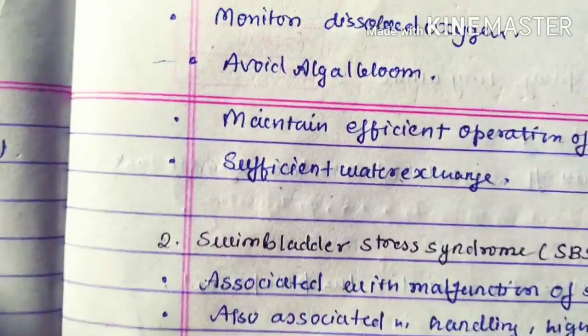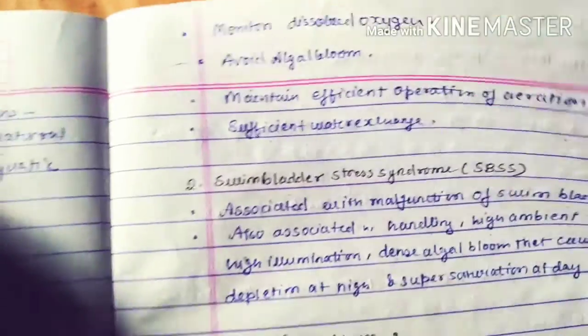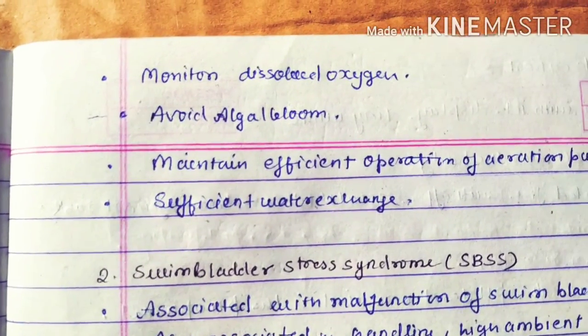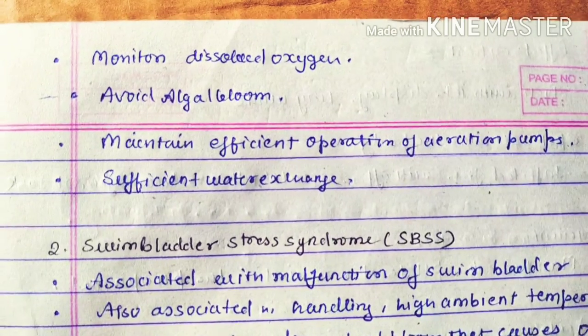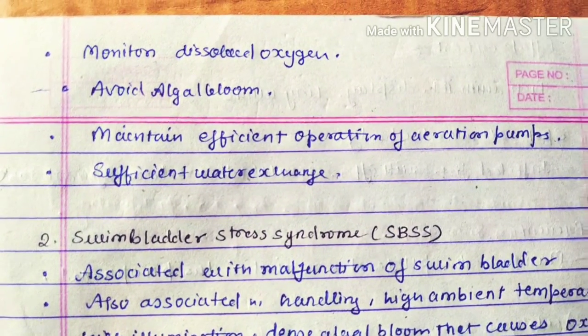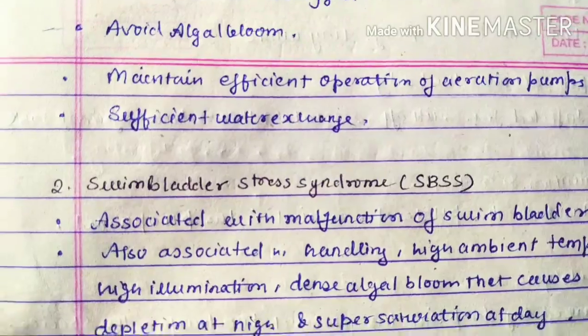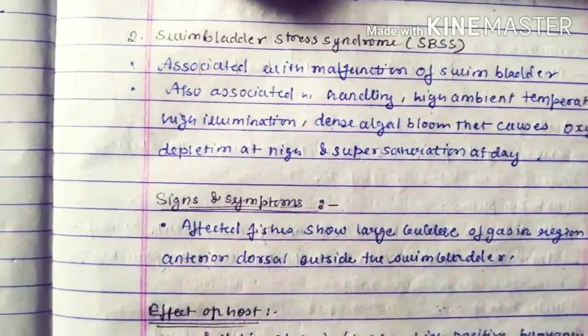Prevention and control for gas bubble disease: monitor dissolved oxygen, avoid algal bloom, maintain efficient operation of the aeration pump, and ensure sufficient water exchange.